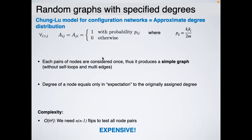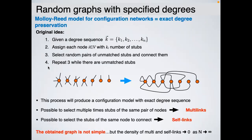Very often the Chung-Lu model is used not to actually generate the network but to study its expected properties analytically. We will see this later in community detection, where we compare whether an observed edge exists with the probability given by the configuration model.